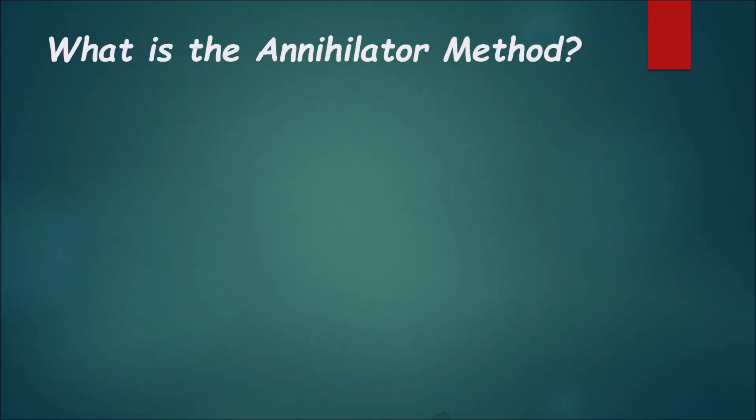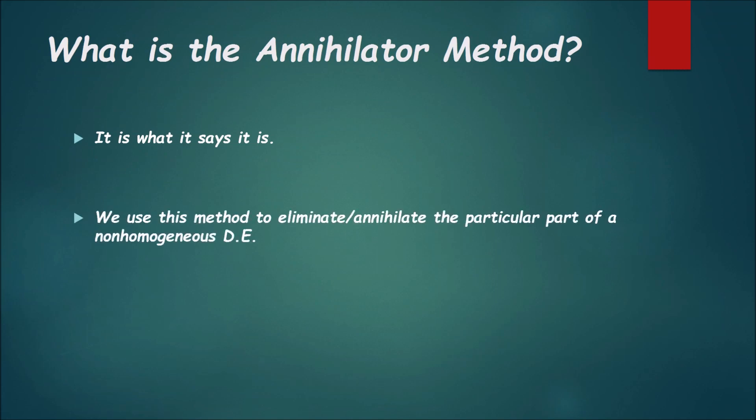So let's go ahead and get into this. First, what is the annihilator method? Well, it is what it is. But seriously, the annihilator method is a method that we use to eliminate or annihilate the particular part of a non-homogeneous differential equation or Diff EQ for short. When we do this, we'll end up with an equation like y double prime plus py prime plus qy equals zero instead of the latter where you have g(t), the particular part of the Diff EQ that makes it non-homogeneous.